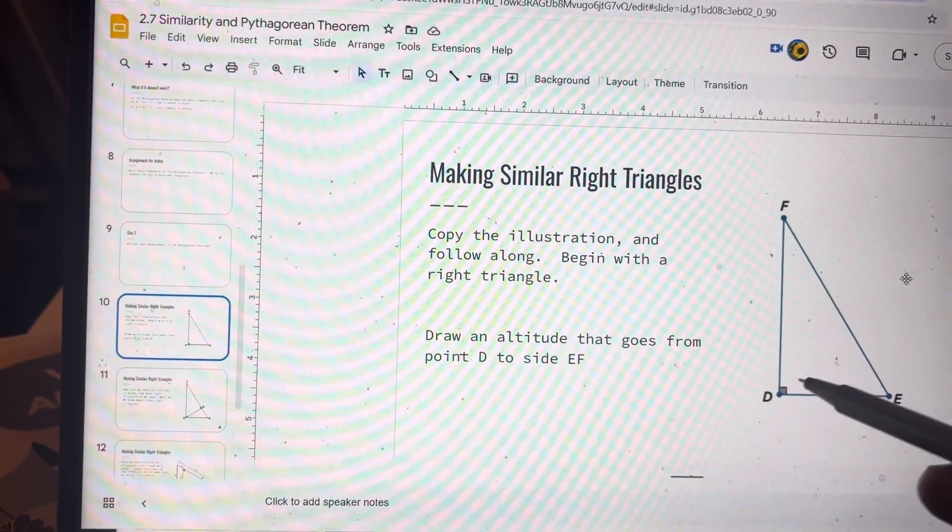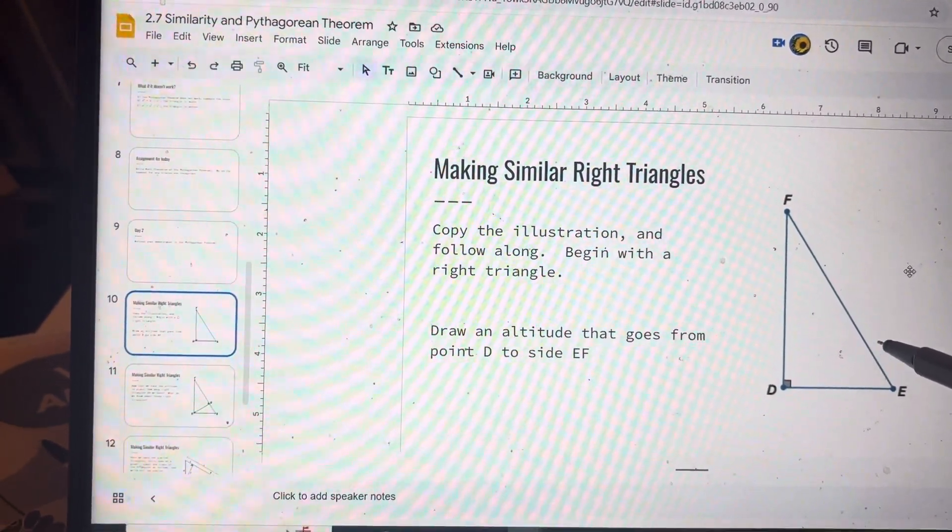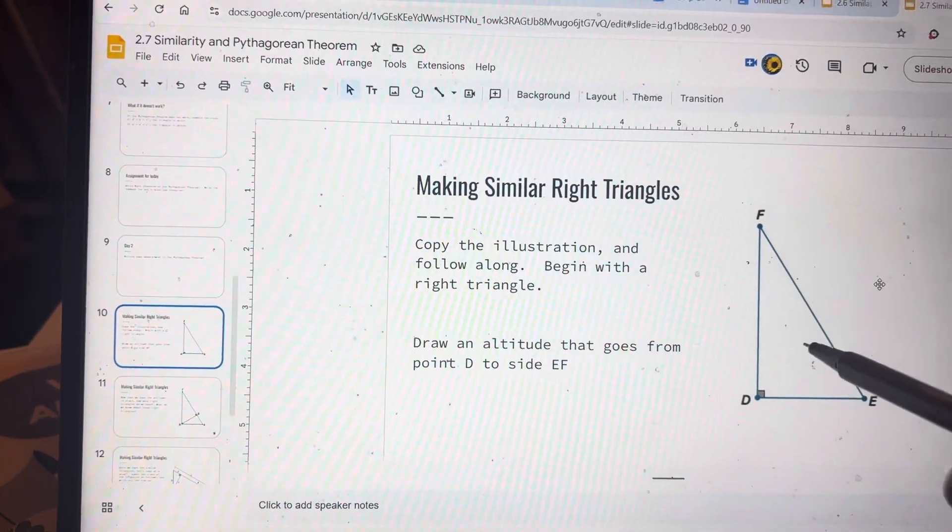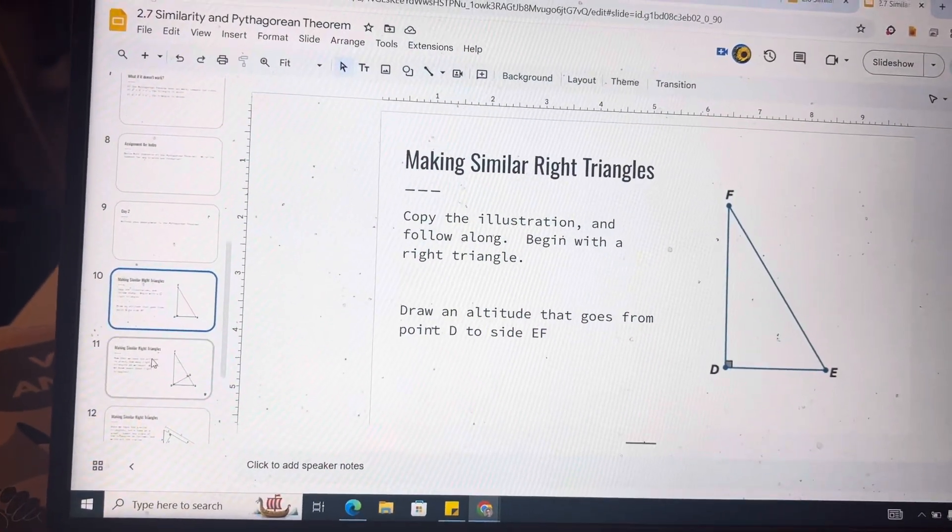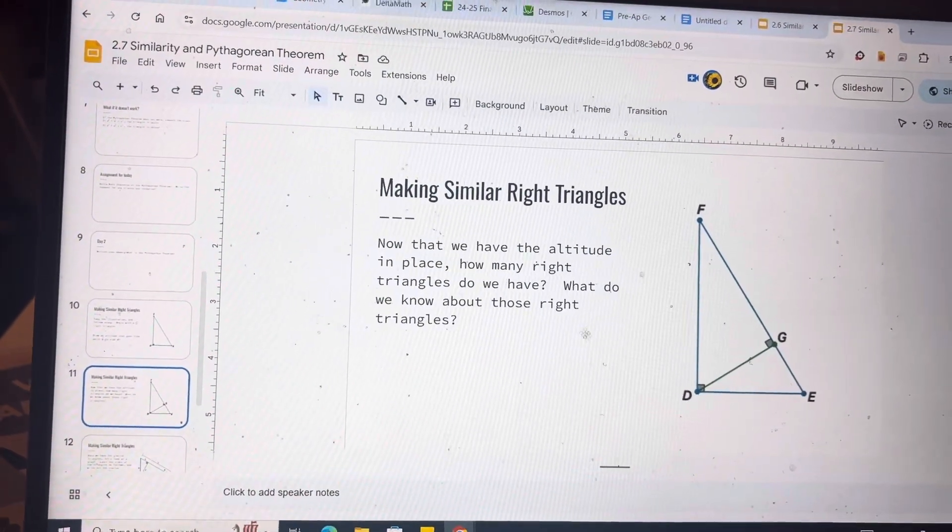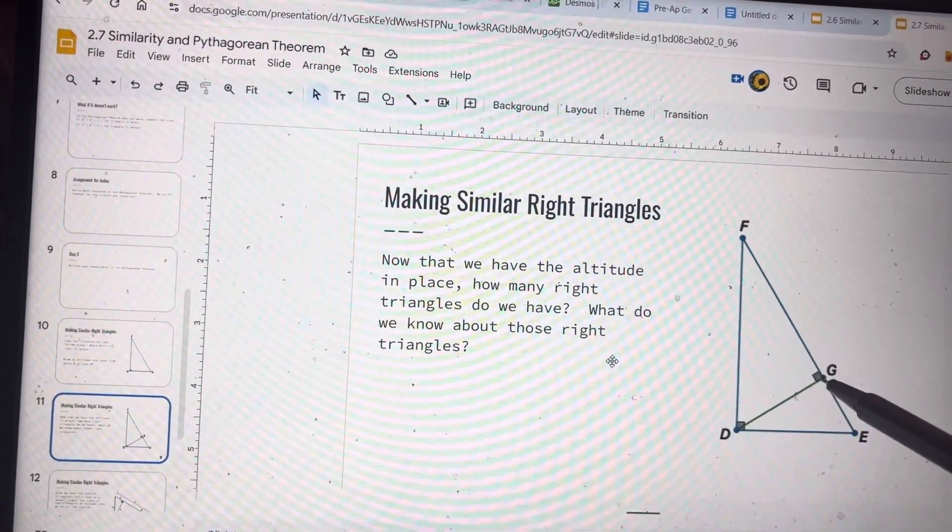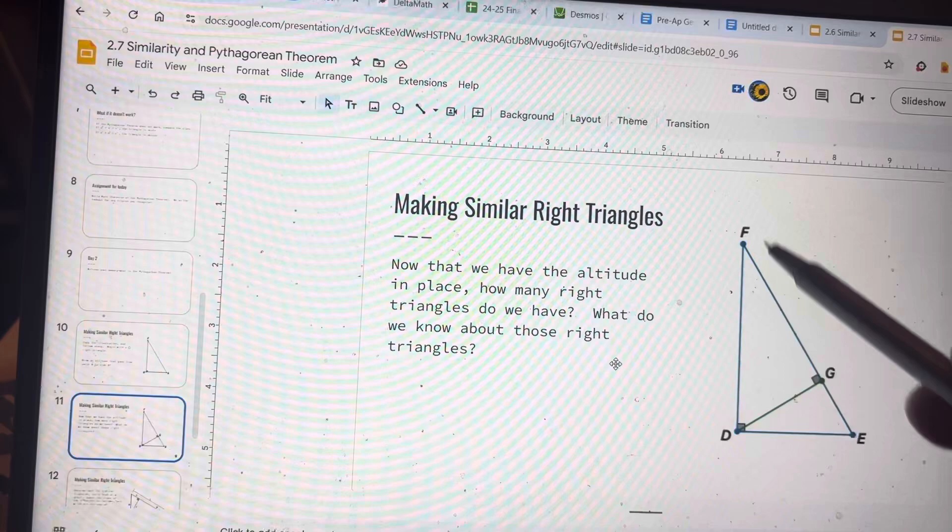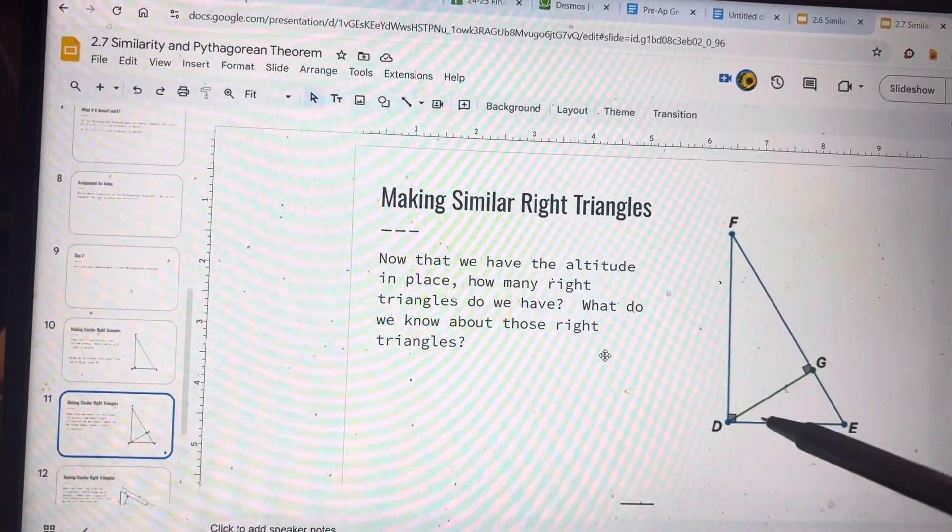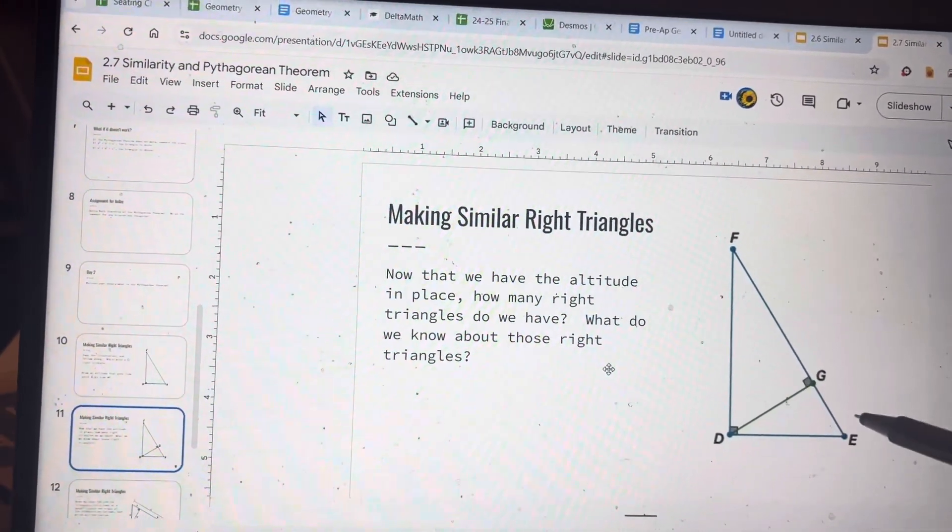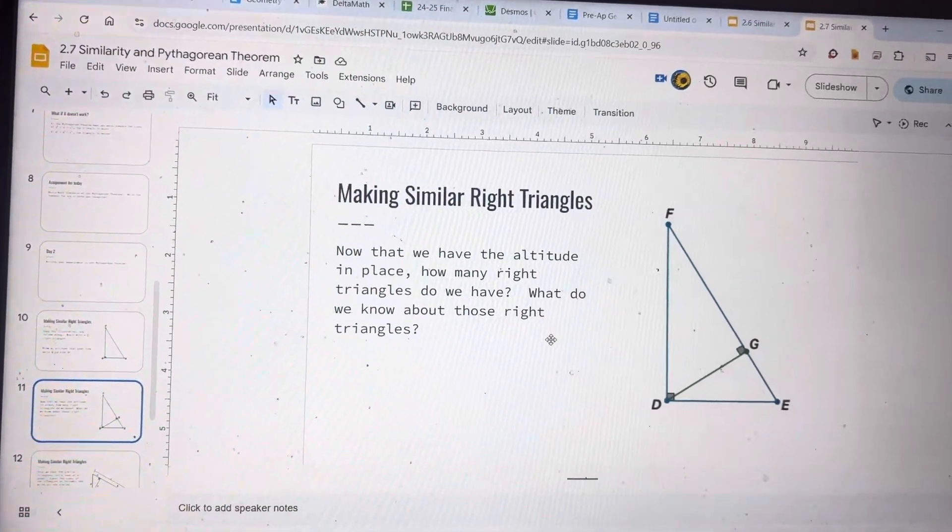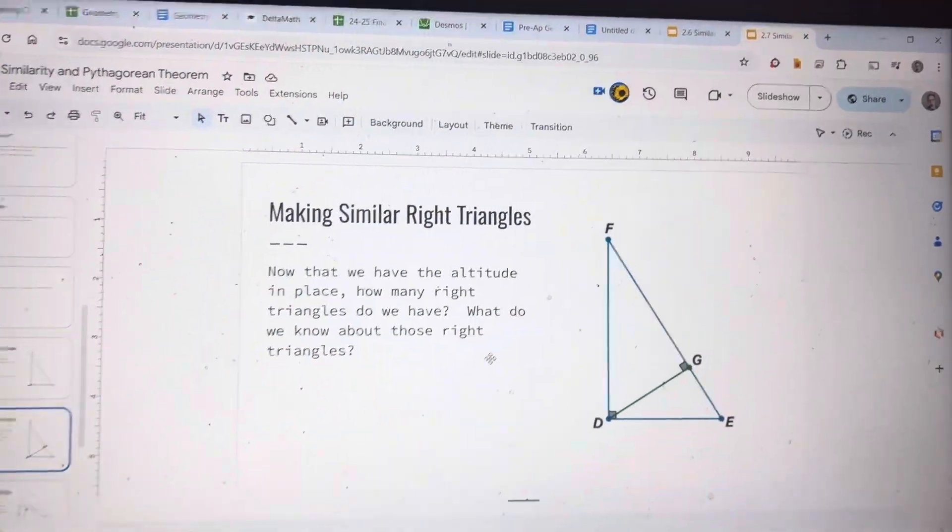And then they ask you to draw an altitude that goes from point D over here to side E, F. Remember, an altitude is going to go from over here, and it's going to be at a right angle. We don't actually need it to find the area. We're just doing this to split some stuff up. When we do this, how many right triangles do we have? Well, this is a right angle here. So this is a right triangle. And then this is a right angle here. So this is a right triangle. And then triangle D, E, F was also a right triangle. So we have three different right triangles.